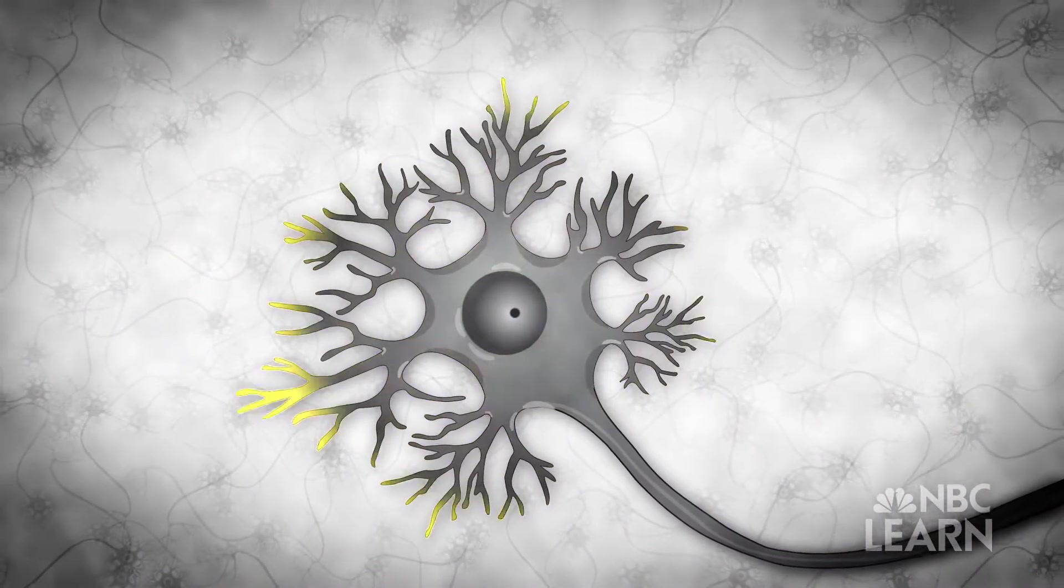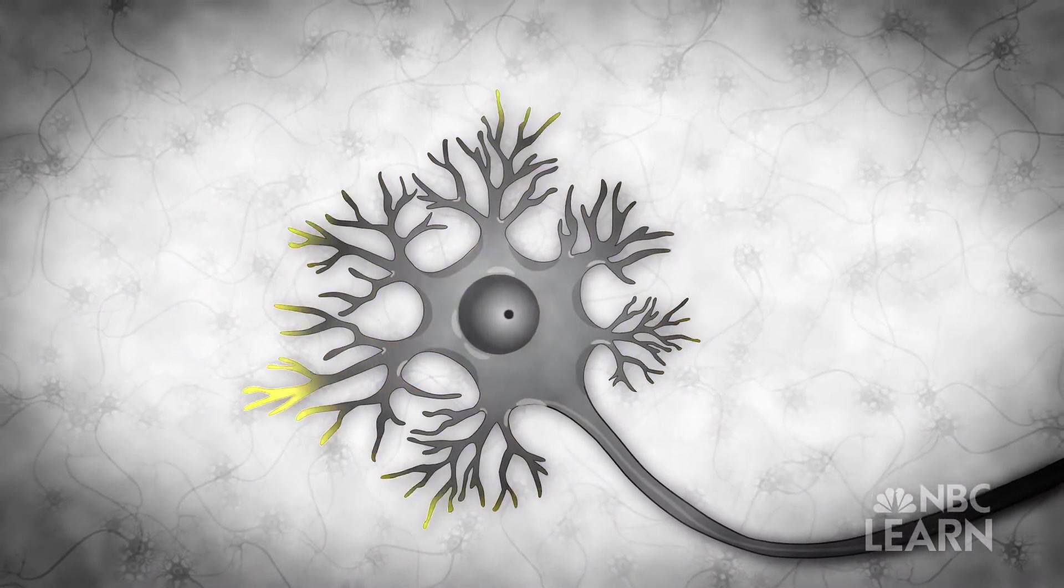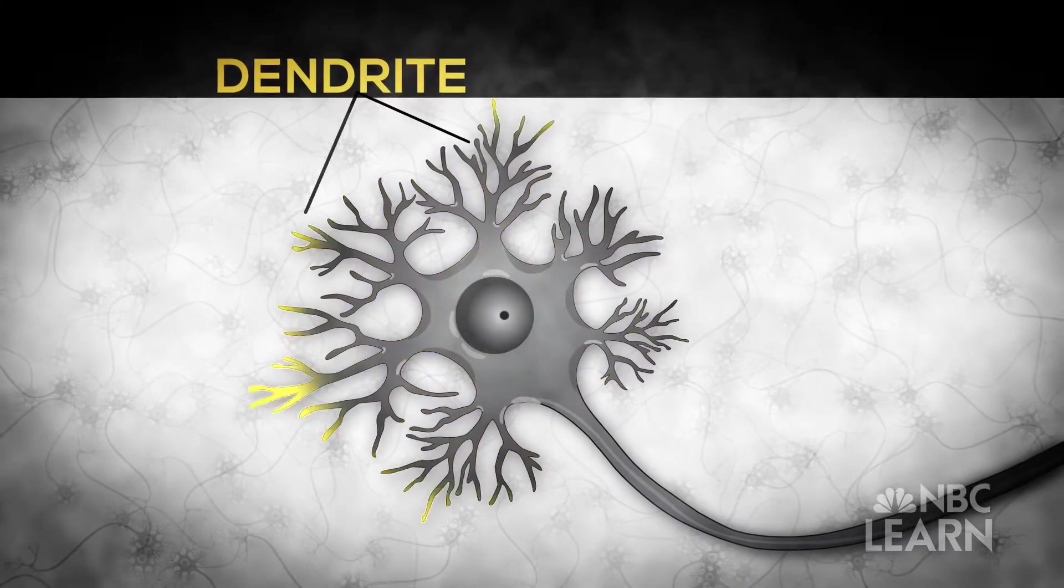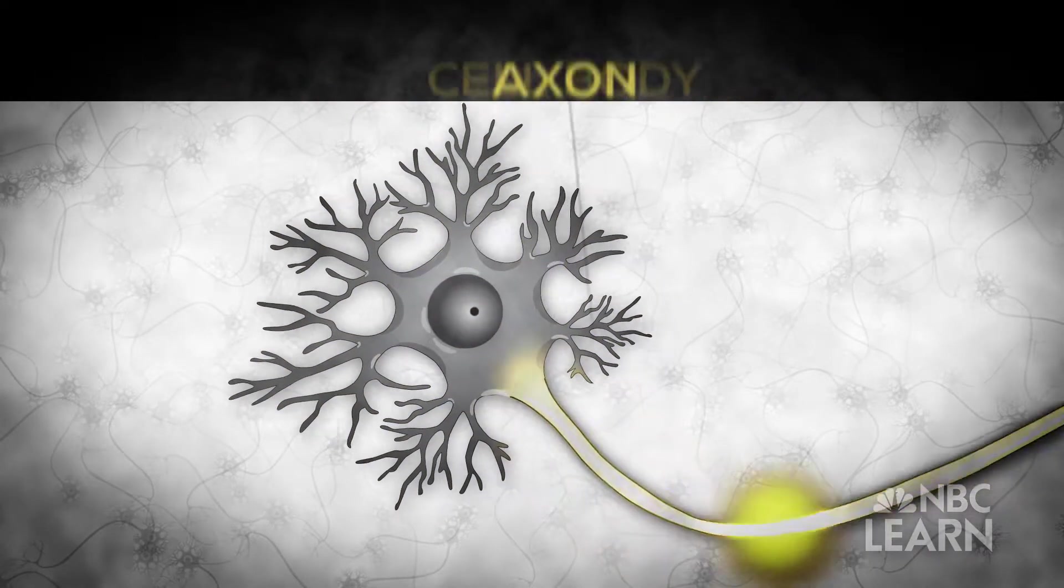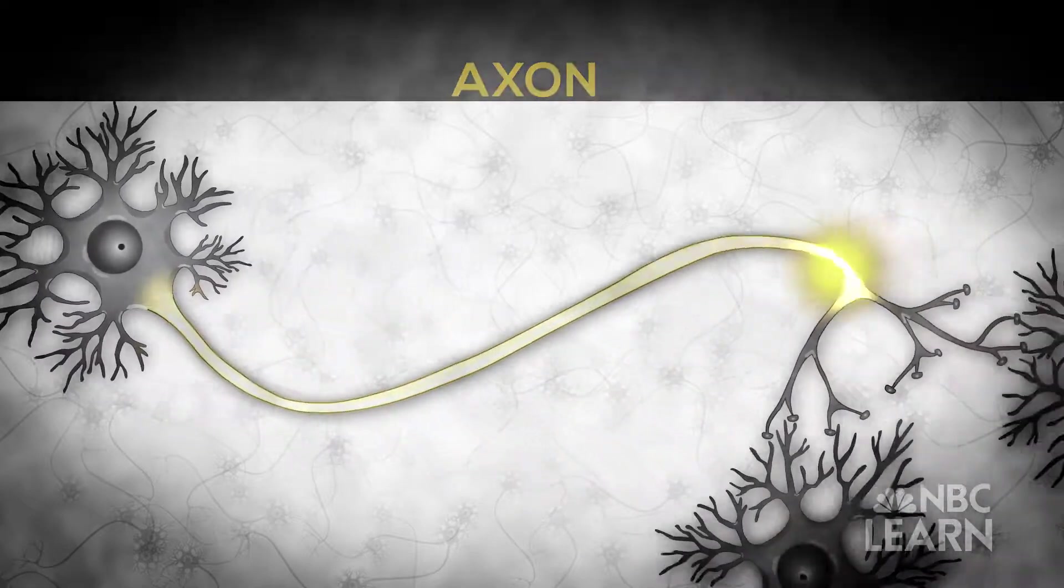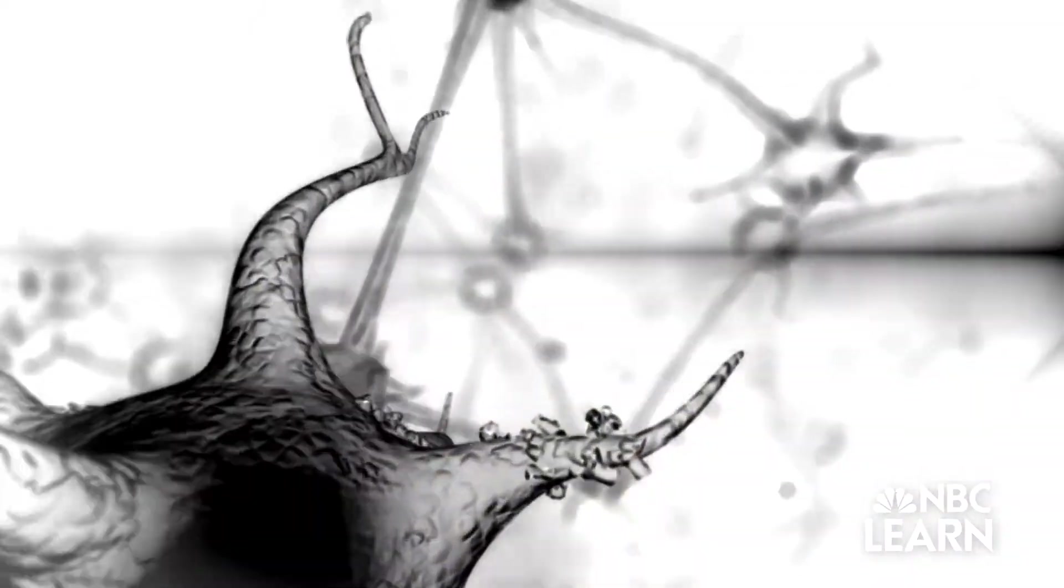The electrochemical signals are received by the neuron's antennae-like dendrites, processed in the cell body, and then passed along through the axon to the next cell in just a fraction of a second. In a human brain, the neuron connects to as many as 10,000 other neurons.